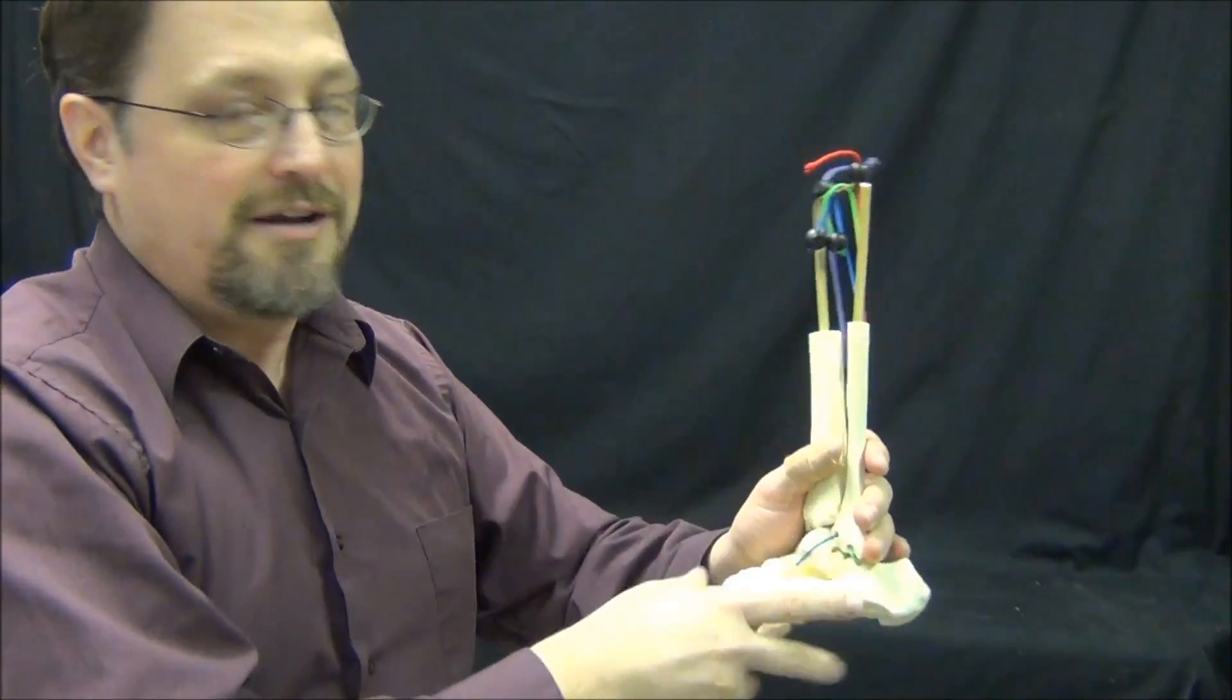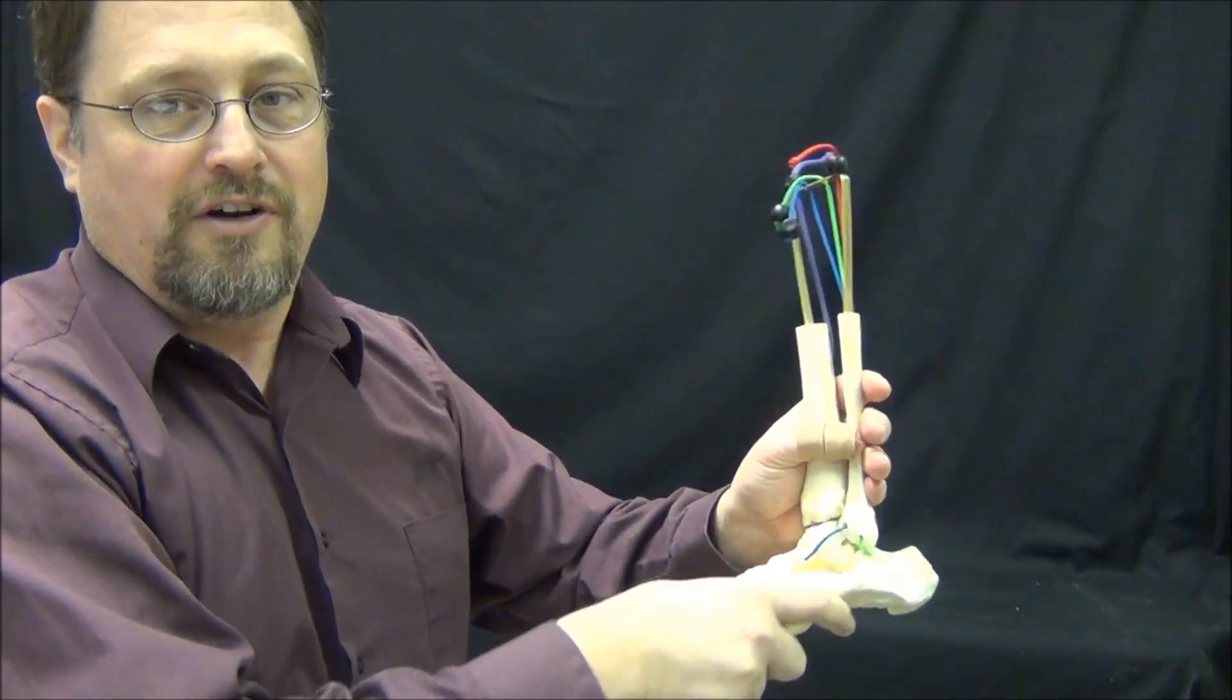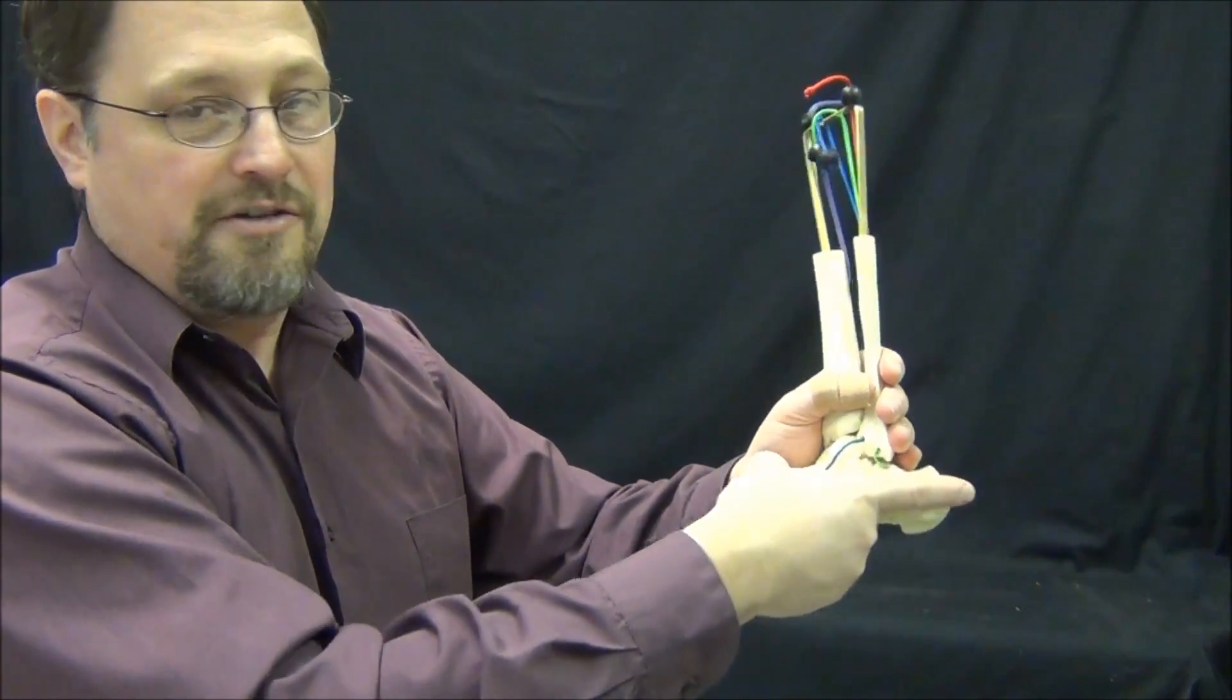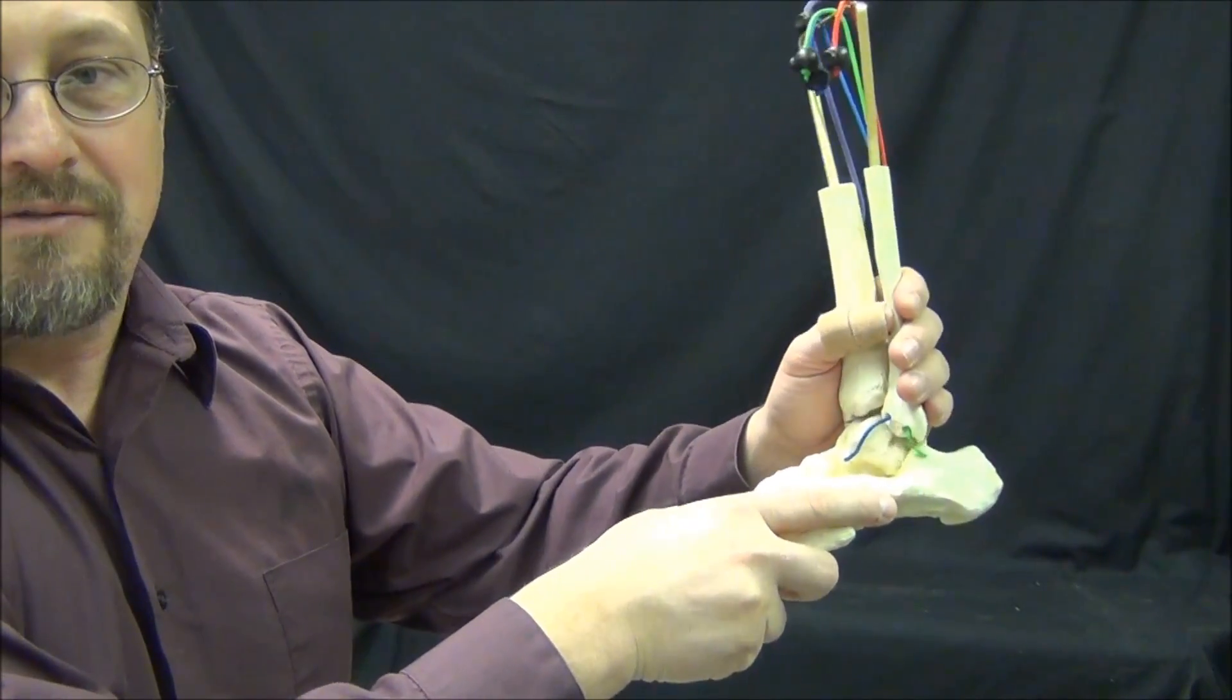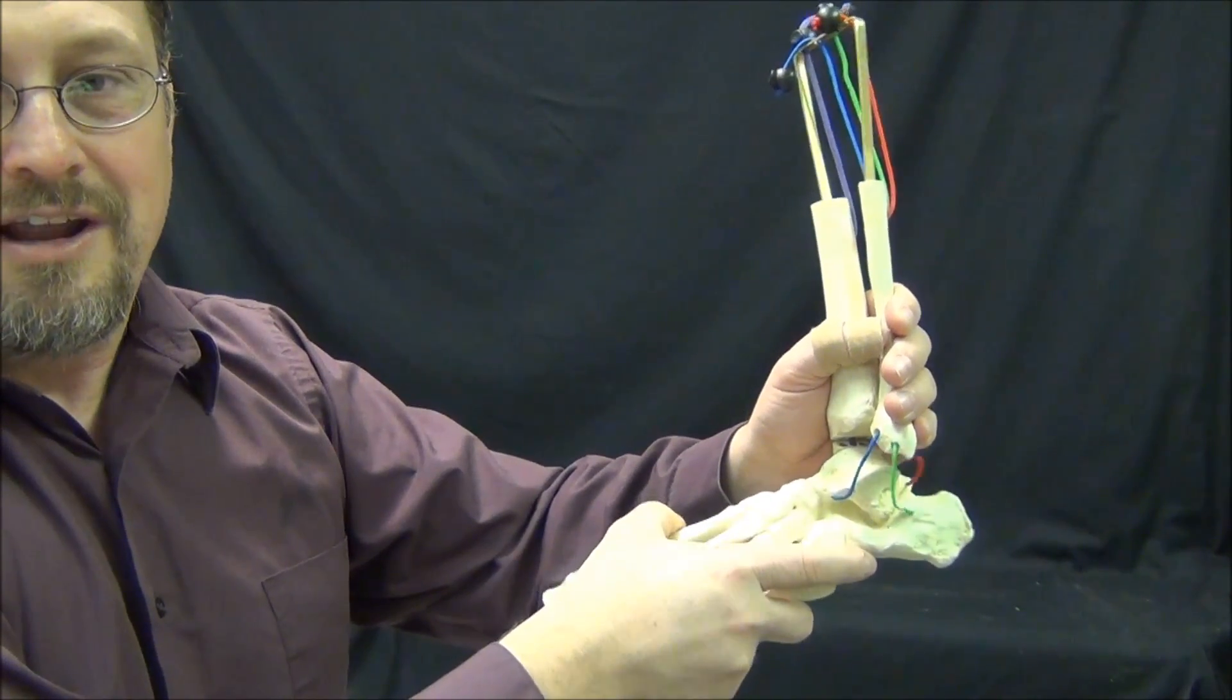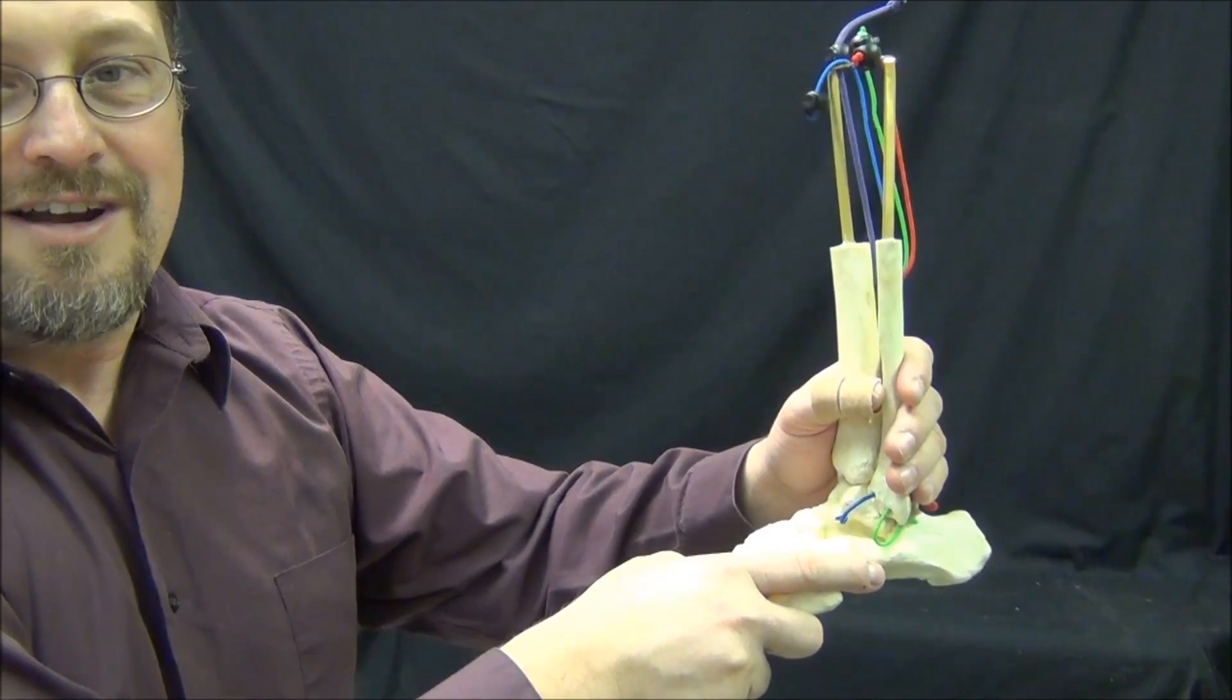We can even make it more severe by increasing the number of ligaments involved, the sliding and drawer signs that are present thereafter. And if you make it really severe with an inversion sprain, we can pretty much gap the entire lateral side of the ankle right there. Bad news.